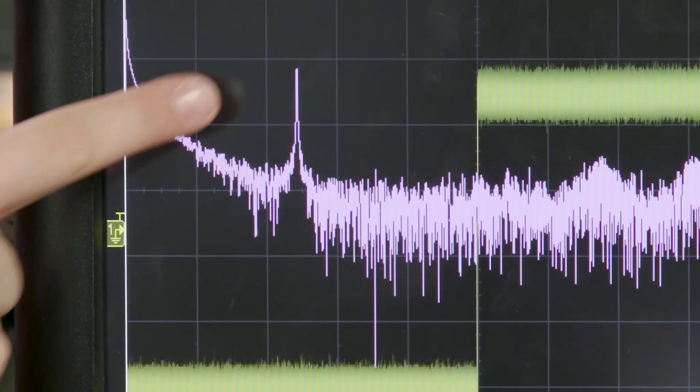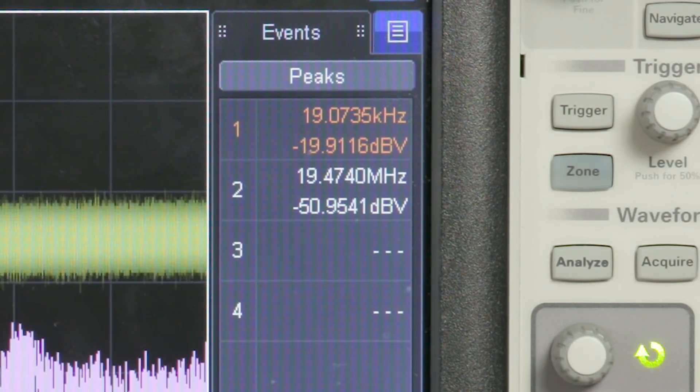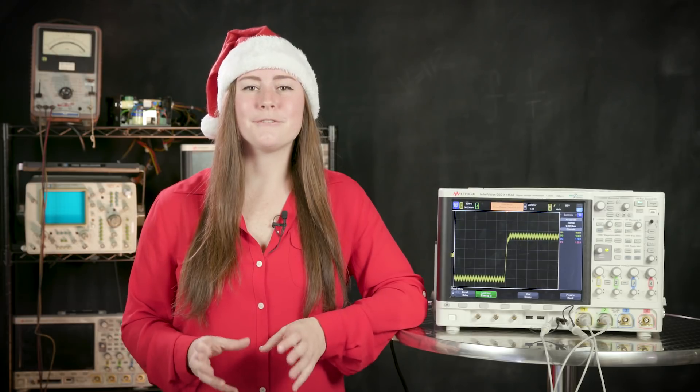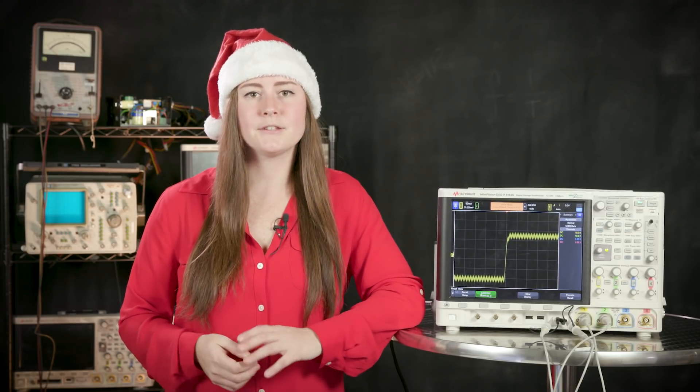We can see the spike for the high frequency noise riding on the signal right here, and we can see it occurs at 19.5 megahertz. Now that we know what the frequency of the noise is, we can identify what it is that's causing it and figure out how to eliminate it.